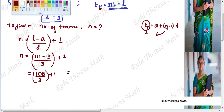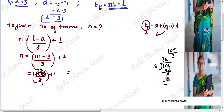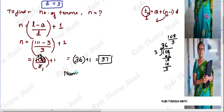Substituting the values: n equals (111 minus 3) divided by 3, plus 1. That gives 108 divided by 3. Calculating: 3 times 3 is 9, remainder 1; bringing down 8, 3 times 6 is 18, so the quotient is 36, remainder 0. So 108 divided by 3 equals 36. Substituting back: 36 plus 1 equals 37. So the number of terms in the given AP is equal to 37. There are 37 terms in this sequence.